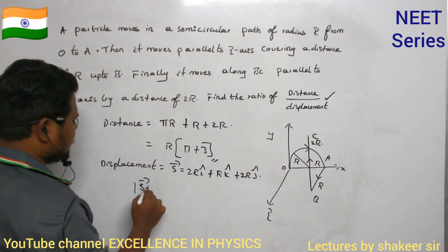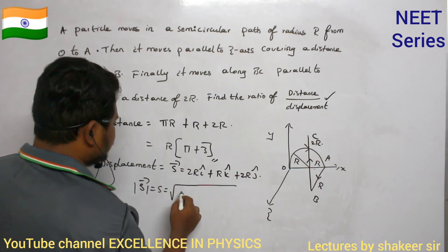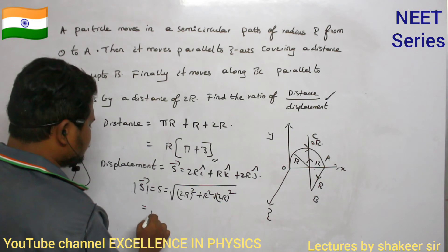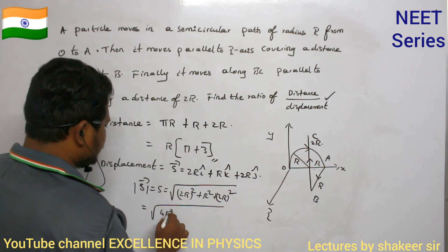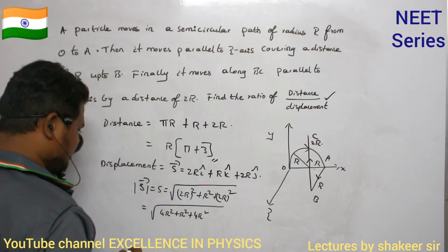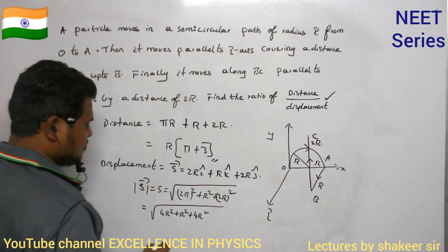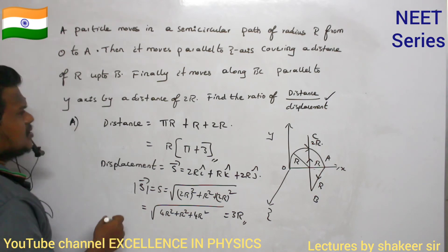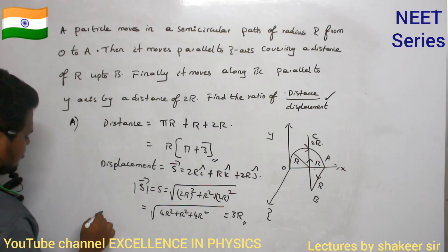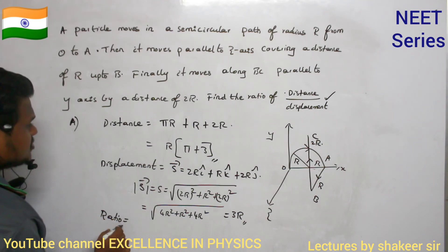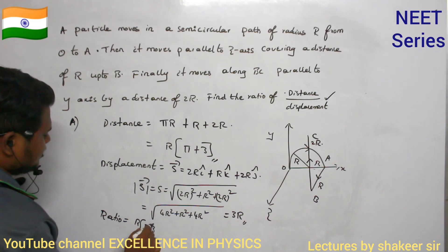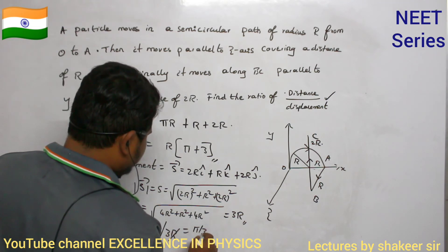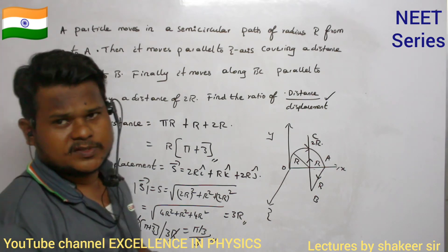Magnitude of displacement: |s| = √((2r)² + r² + (2r)²) = √(4r² + r² + 4r²) = √(9r²) = 3r. Ratio of distance to displacement = r(π + 3) / 3r = (π + 3)/3. That is the answer.